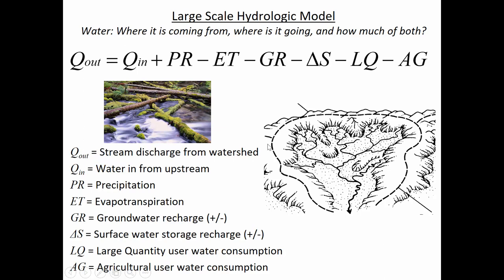Here are some of the main factors that have to be considered. Q in refers to any water coming from a watershed upstream — surface flow or water flowing from a river. In this case there aren't any upstream rivers; it's completely encapsulated by a ridge line. But there are cases where you may have a watershed with a larger river upstream flowing through. The precipitation is going to be coming in from above, falling on the ground surface. Evapotranspiration has a minus sign because it's not adding to the amount of water available to flow out of the watershed.